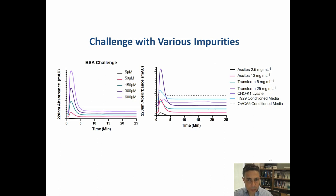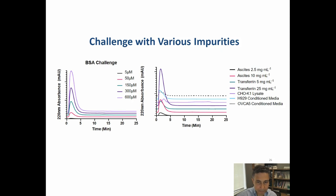We also challenged the column with various impurity types: ascites at different concentrations, transferrin, cell lysates, and conditioned media from a multiple myeloma cell line and an ovarian cancer cell line. In all these cases, the column did not capture impurities from any of these sources, and all contaminants came out in the early peak.